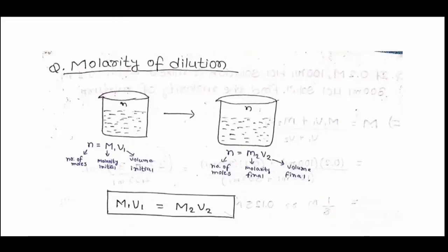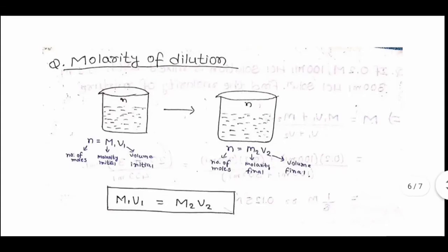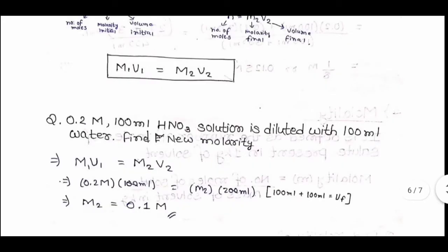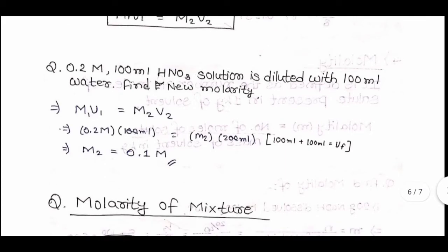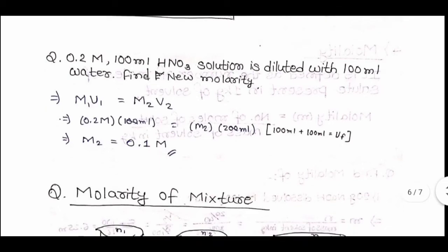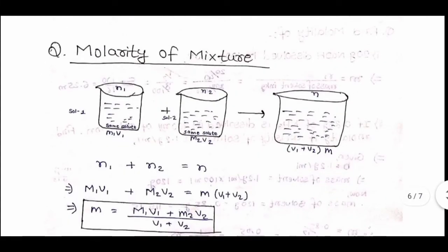Molarity of dilution: if a solution is diluted, the formula used is M1V1 = M2V2. Question: 0.2 M, 100 mL HNO3 solution is diluted with 100 mL water; find the new molarity. Applying M1V1 = M2V2: 0.2 × 100 = M2 × 200, so M2 = 0.1 M.